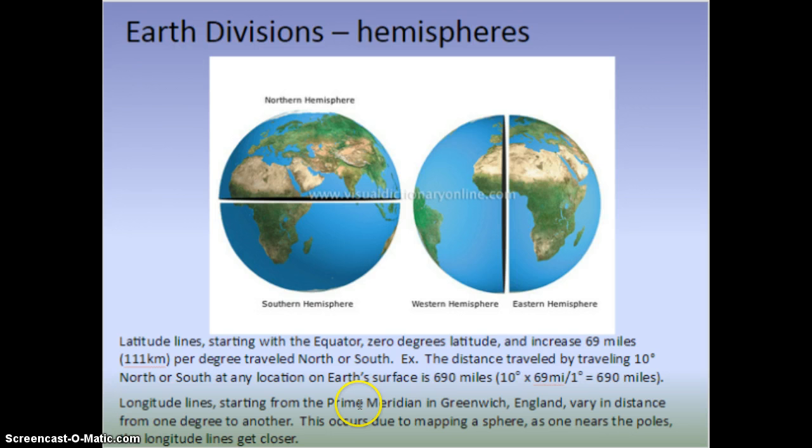However, longitude lines, starting from the prime meridian in Greenwich, England, they vary in distances from one another. And this is where you will find that this occurs due to mapping a sphere. As you near the poles, the longitude lines get closer.